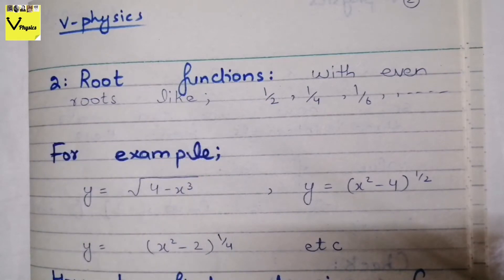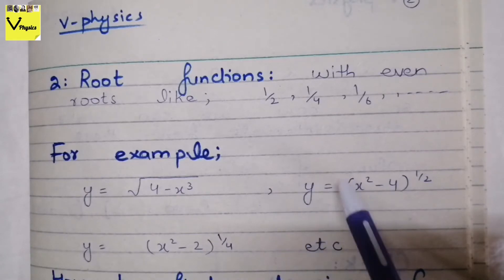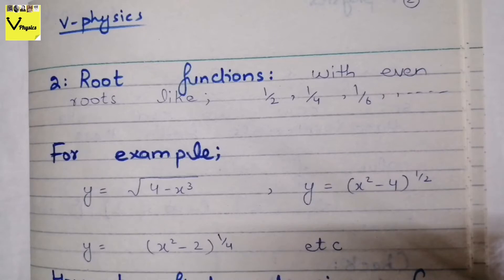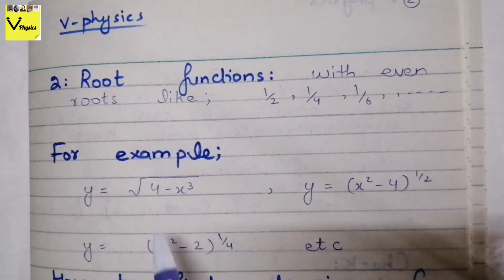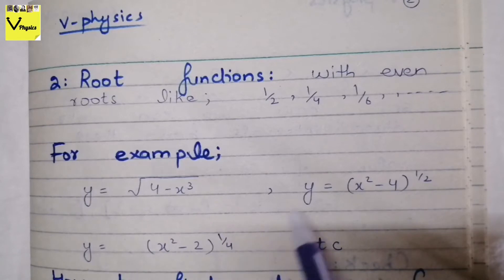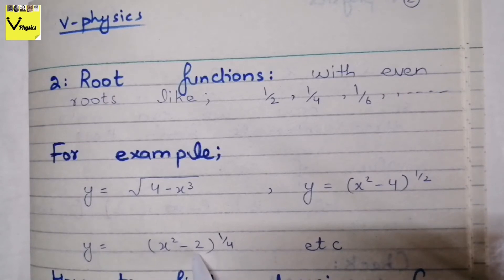The second type of functions are root functions with even roots — even roots meaning powers like 1/2, 1/4, 1/6. For example, y = √(4 − x³). The square root over (4 − x³) is equal to (4 − x³) to the power 1/2. Similarly, y = (x² − 4)^(1/2), and y = (x² − 2)^(1/4). How do we deal with all such functions?